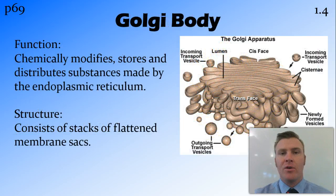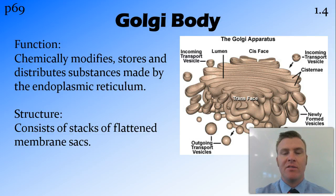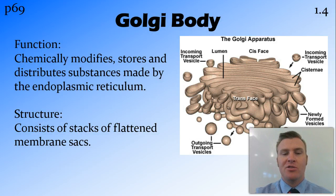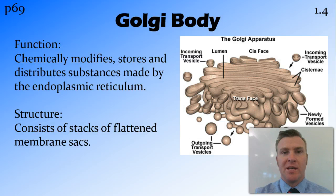The Golgi body is made up of flattened membrane sacs, again increasing the surface area, and its job is to modify, store, and distribute substances that are made in the endoplasmic reticulum — so proteins, lipids, things like that. So it works very closely with the endoplasmic reticulum.